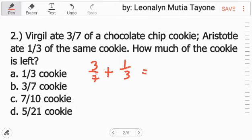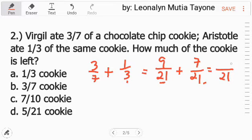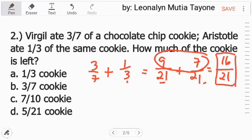So, the least common denominator nito ay 21. 21 divided by 7 equals 3. 3 times 3 equals 9. Then, plus 21 divided by 3 equals 7. 7 times 1 equals 7. In other words, 3 over 7 is equivalent to 9 over 21. 1/3 is equivalent to 7 over 21. Now, pwede na tayo mag-add. Just copy the denominator na 21. And then, numerator ang i-add natin. 9 plus 7 equals 16.